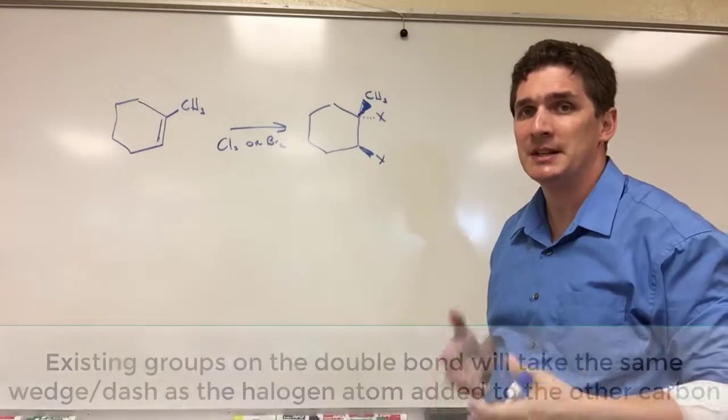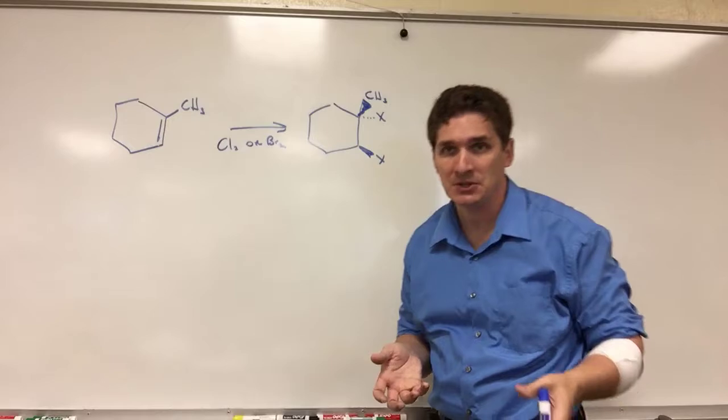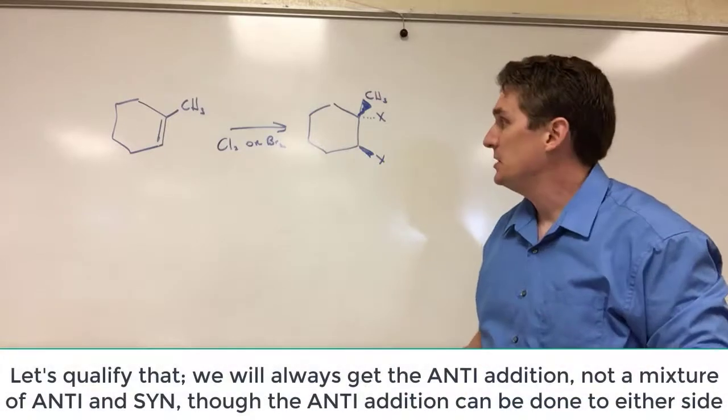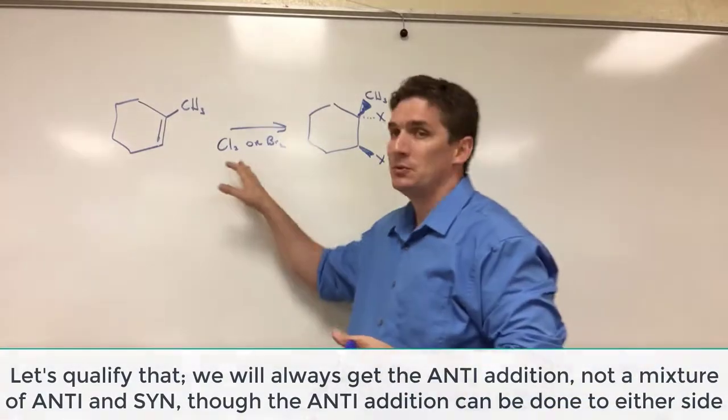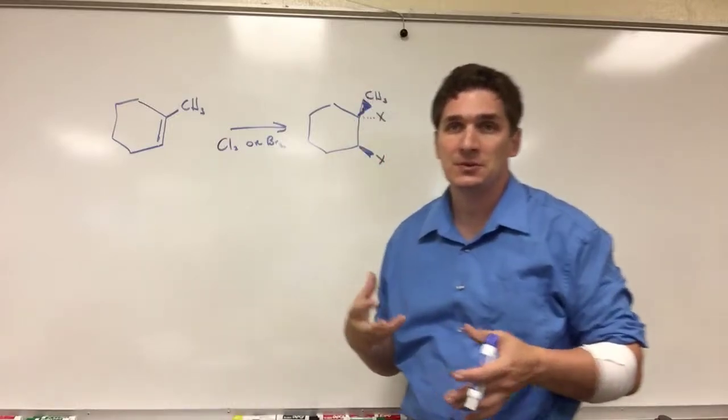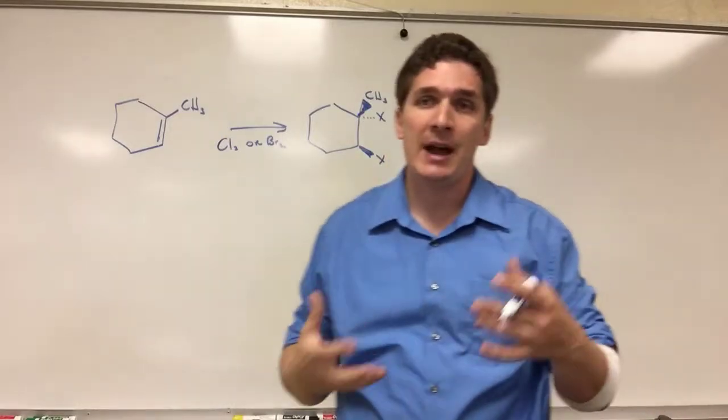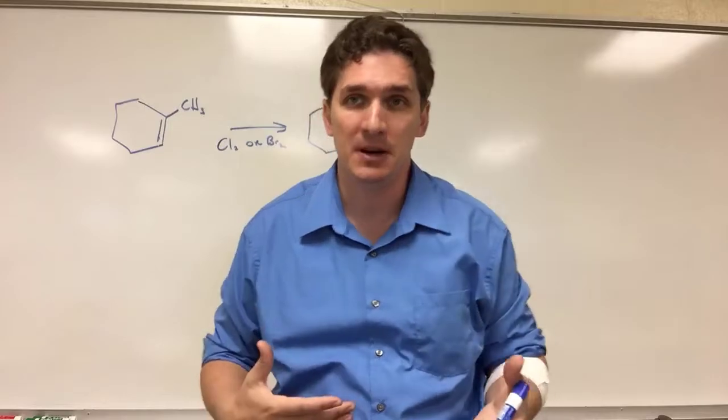So we will always get this anti addition. We're not going to get a racemic mixture. So the challenge for this is keeping track of your stereochemistry. Now, again, we're going to work with both Cl2 or Br2 in terms of our X groups, but this is how we can do a halogen addition to a double bond.